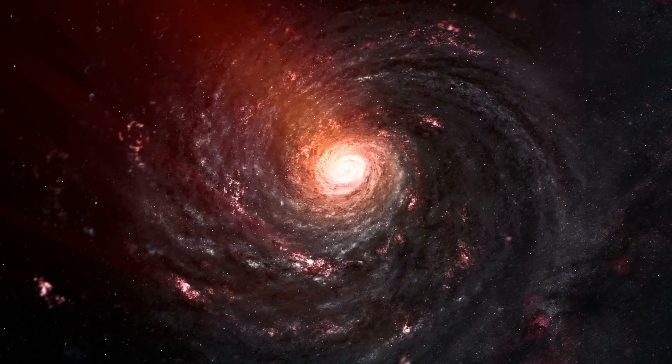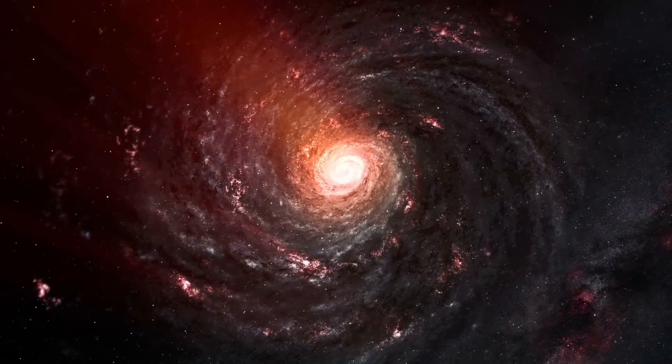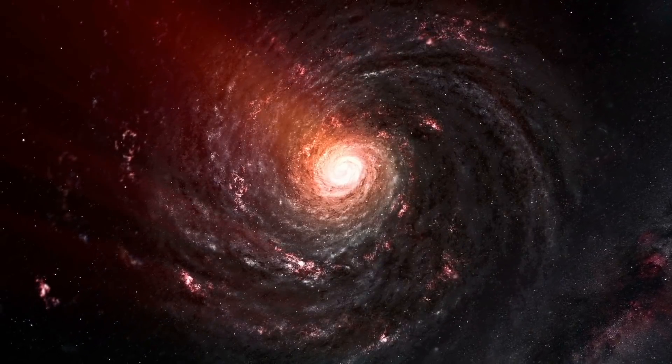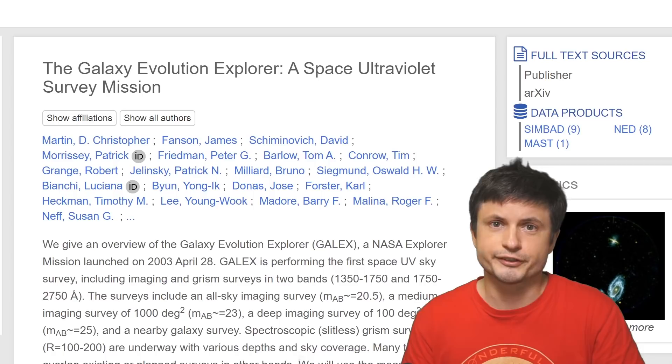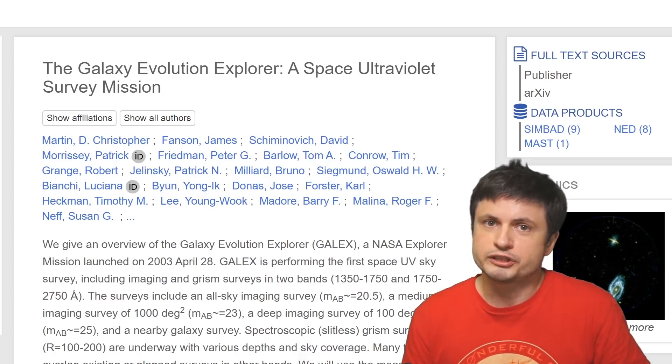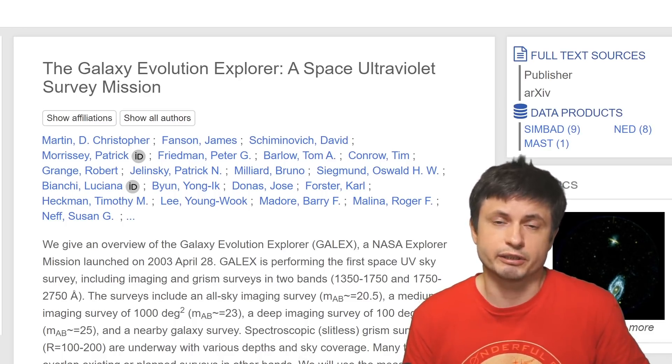So what about a Dyson sphere built around the Sagittarius A star, a black hole in the middle of our own galaxy? Well, in this case, the scientists are pretty certain it would emit a lot of ultraviolet light, a lot of near-infrared light, but also quite a lot of optical light, meaning that it would be a multi-wavelength detection, and it should be detectable and also visible to modern telescopes. With one specific survey, this one right here, known as GALEX, or Galaxy Evolution Explorer, potentially already having enough data collected in order to establish if such a structure actually exists around Sagittarius A star.